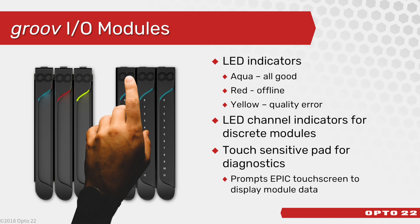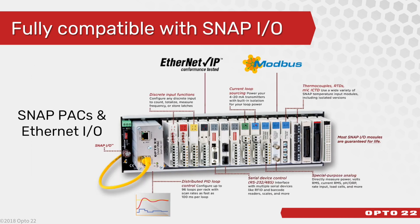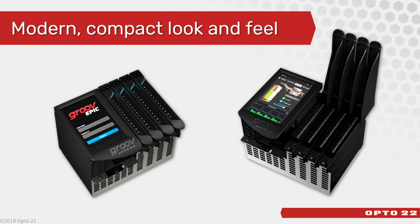Then we went one step further and added a touch-sensitive pad to each module. By simply touching the top of the module, the GrooveEpic's touch screen will automatically display all the information about that module — no need for a PC just to check out your I/O. While we are offering our most popular I/O module types at launch, we won't have all 100-plus modules offered in the SNAP I/O line right away. But SNAP packs and SNAP Ethernet I/O are 100% supported by the GrooveEpic system, meaning you can use your existing I/O if you have it.